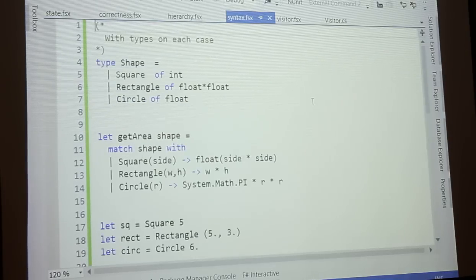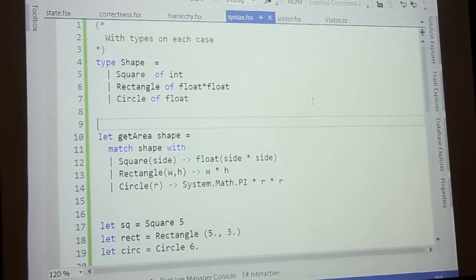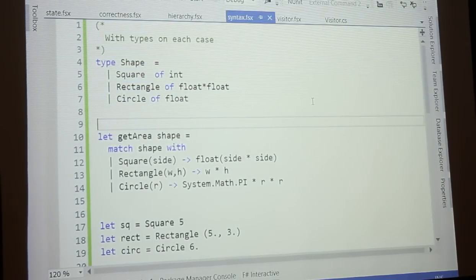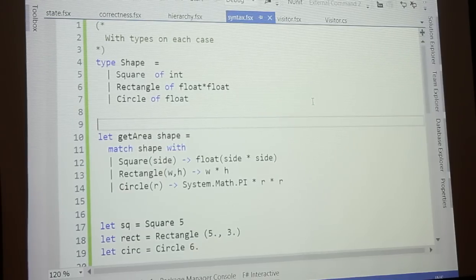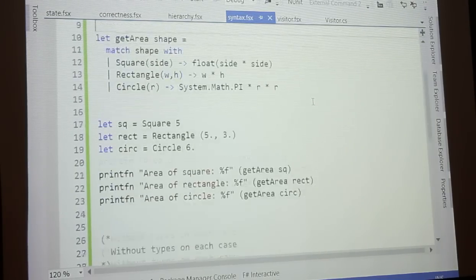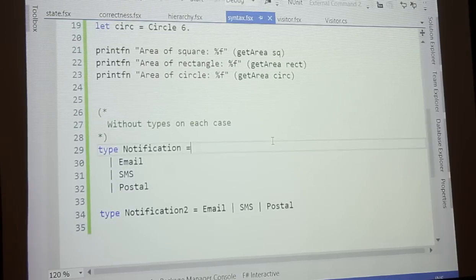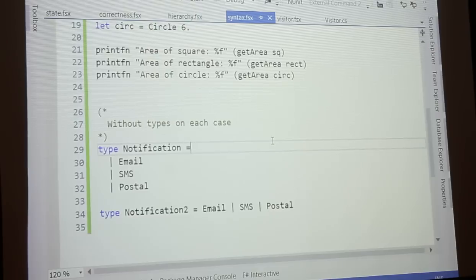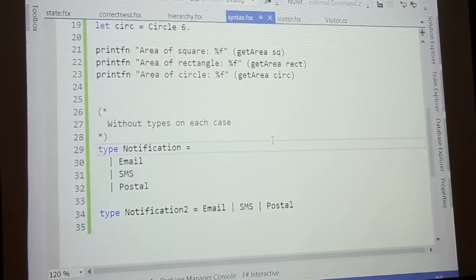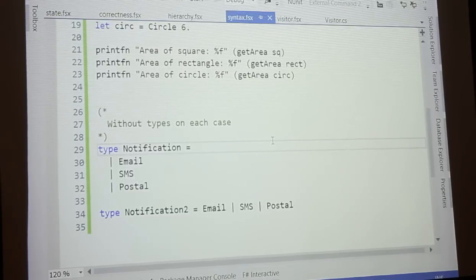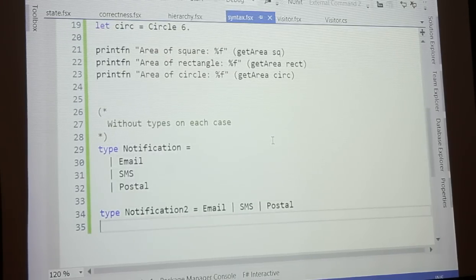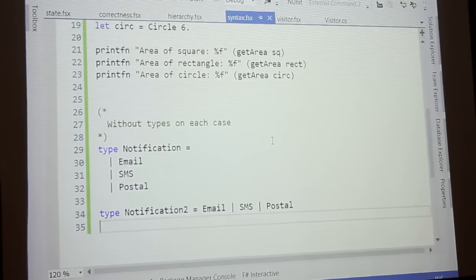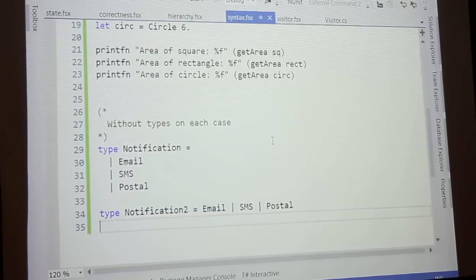So that was an example showing a discriminating union where we actually put different types on the different cases. We don't have to have types on the cases. So an example down here you say type notification equals email SMS postal. So that is very much like an enumeration that you would think of in C#. And nice enough kind of syntactically you can also do it on a single line like that which is kind of nice a little more compact.